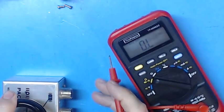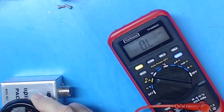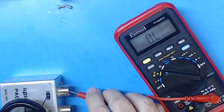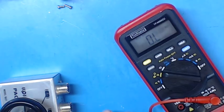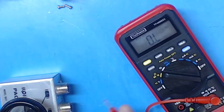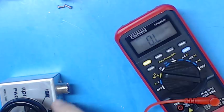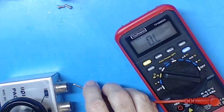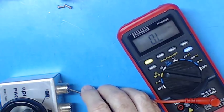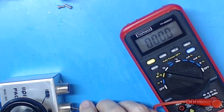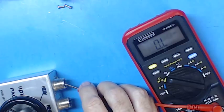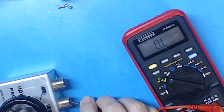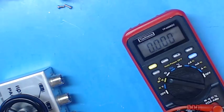Now we'll check continuity between, should be on number one now. And that's good. Number two, it should be open. It's open. OL means overload or infinite resistance in this case. So we'll go to two. We'll check one. That should be OL. Yes. Two. Zero. Three. OL. And we'll go to three. One. OL. Two. OL. And three. Zero. So, looks like it's all working.